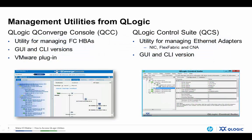Here are some more details about these management utilities. QLogic QConverge Console, or QCC, is used for managing QLogic fiber channel adapters, including the HP branded offerings we just saw. QCC is available in a GUI and CLI for Windows and Linux environments, and there's also a VMware plugin available for managing the adapters from a vCenter environment. QLogic Control Suite, or QCS, is used for managing QLogic Ethernet and converged network adapters, like HP Flex Fabric adapters or the CNAs that we saw.